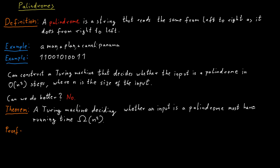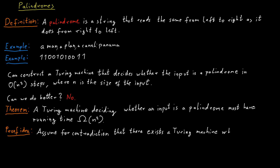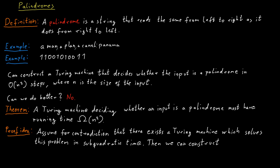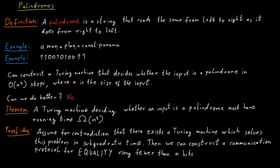Essentially, we will do the following. Assume for contradiction that there exists a Turing machine that can solve the palindrome problem more efficiently. Then we will argue that we can construct a communication protocol for the equality function that uses fewer than n bits. Here is how we do this.